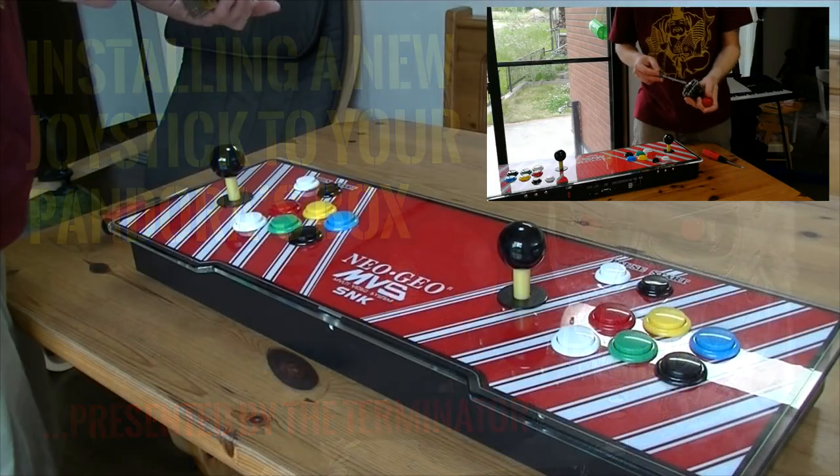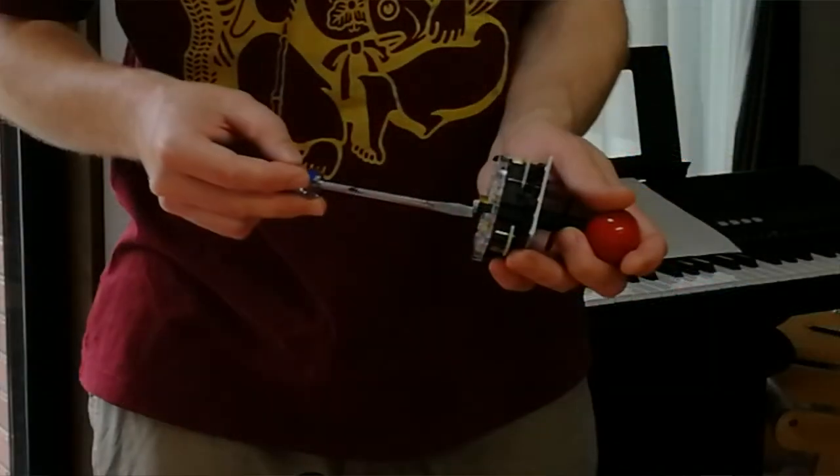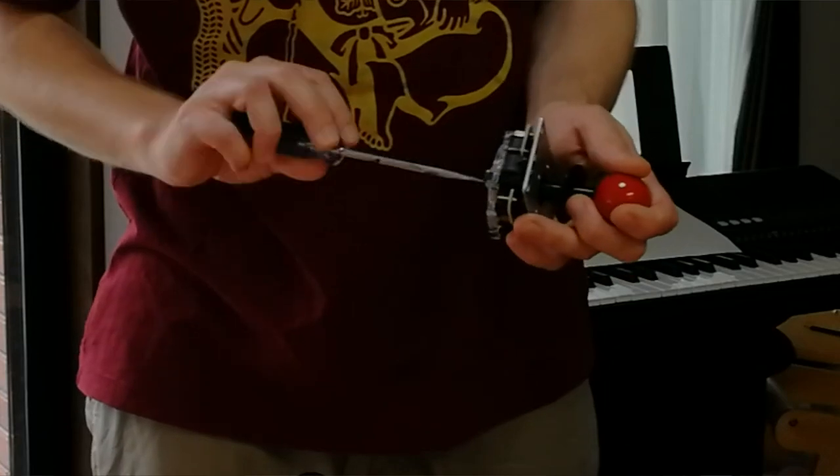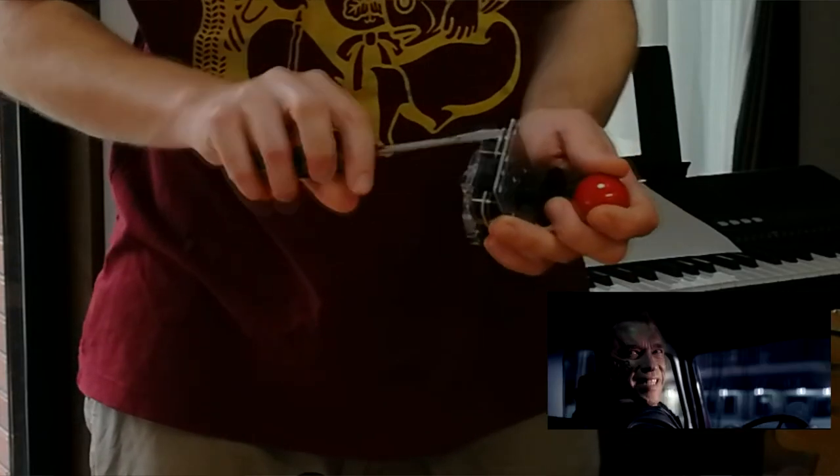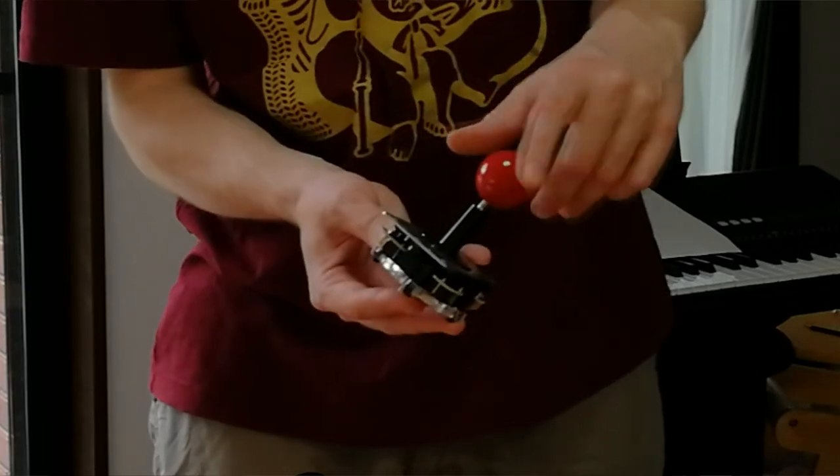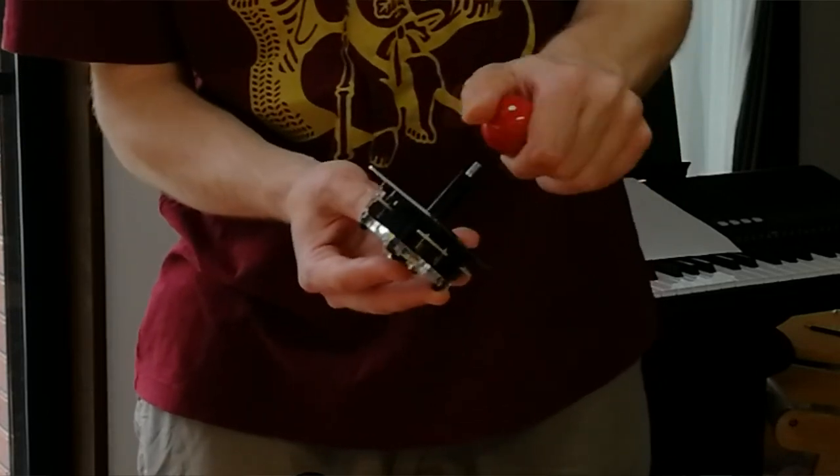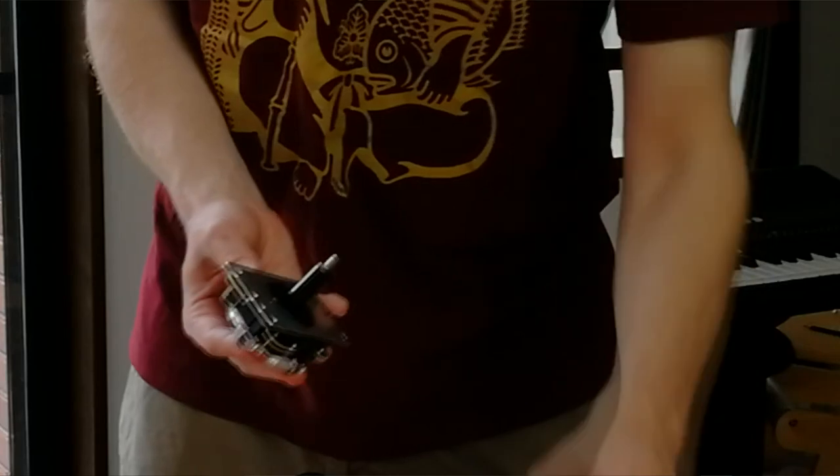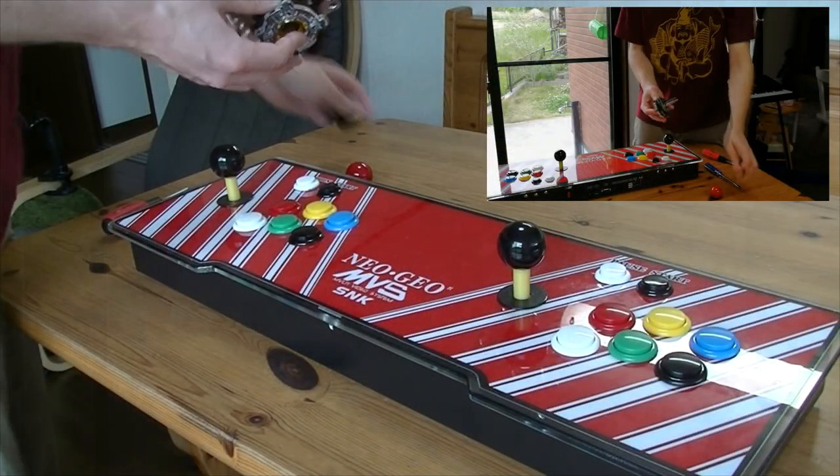Okay, so first we need to unscrew the ball from the joystick. You stick in a minor screwdriver into the bottom and then spin the top like so. Very easy, yeah? Okay, now you have the Sanwa prepared.